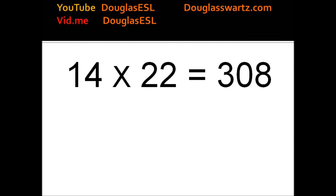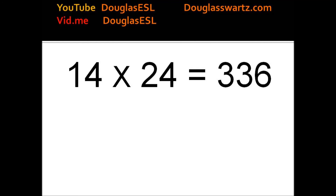14 times 22 equals 308. 14 times 23 equals 322. 14 times 24 equals 336. 14 times 25 equals 350.